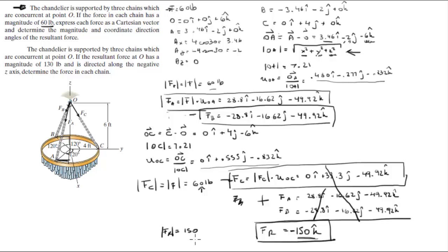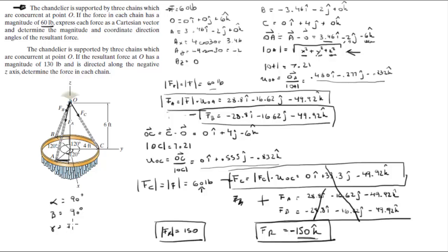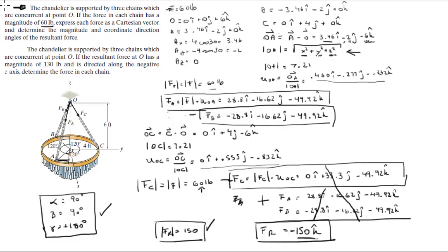For the coordinate direction angles: the i and j components are zero, so cosine inverse of 0 gives α = β = 90°. The z-component is -150 divided by magnitude 150 = -1, and cosine inverse of -1 is γ = 180°. These are the direction angles — this is the final answer for the first part.